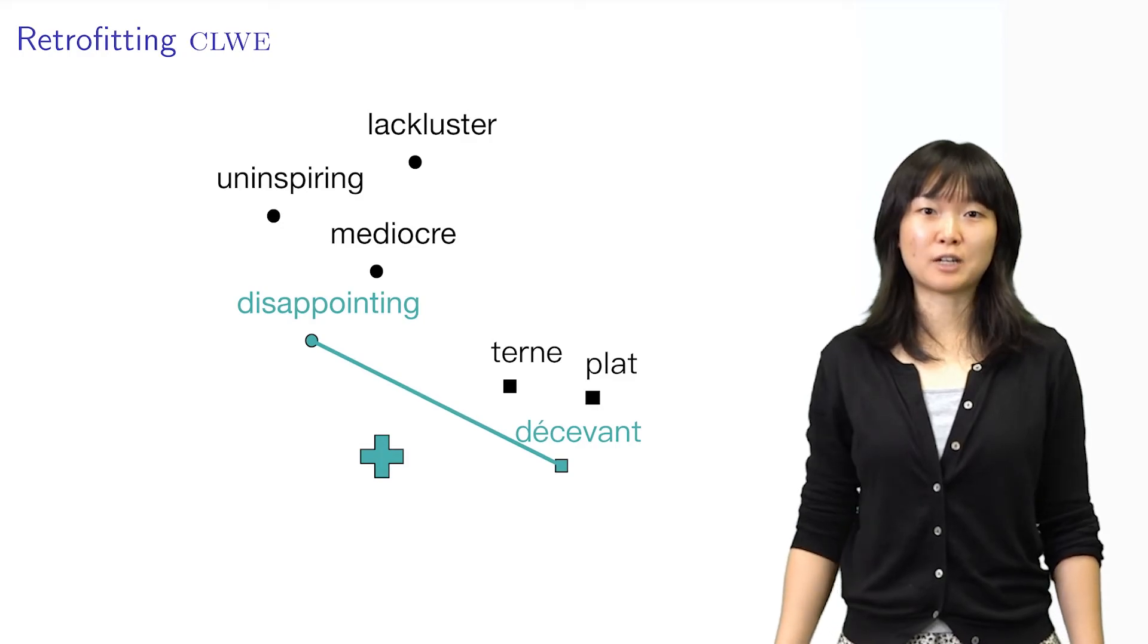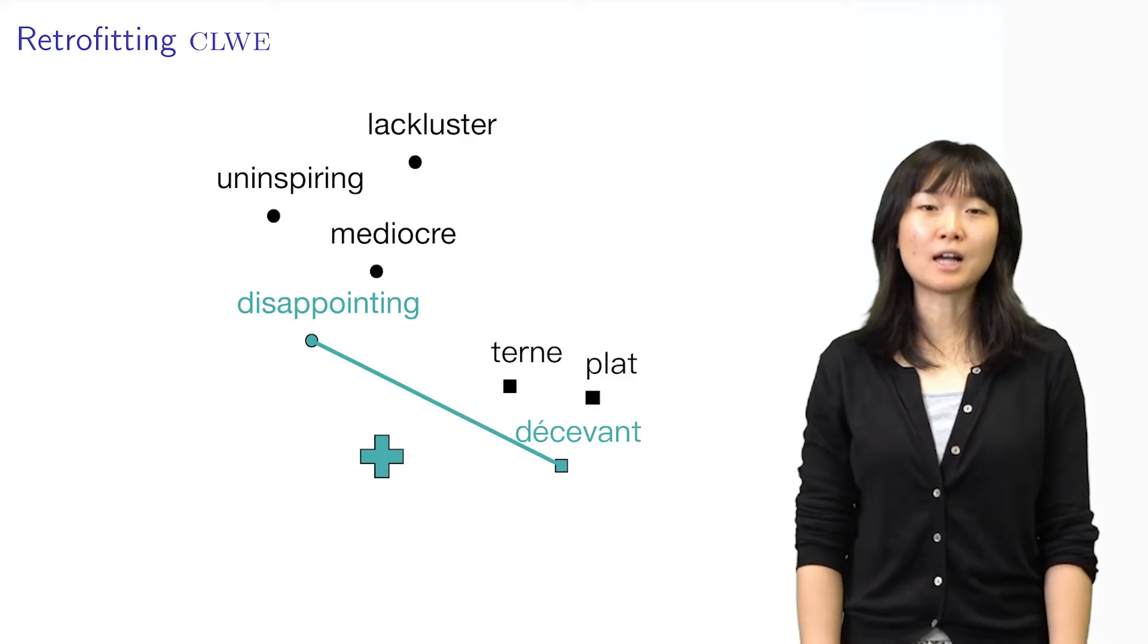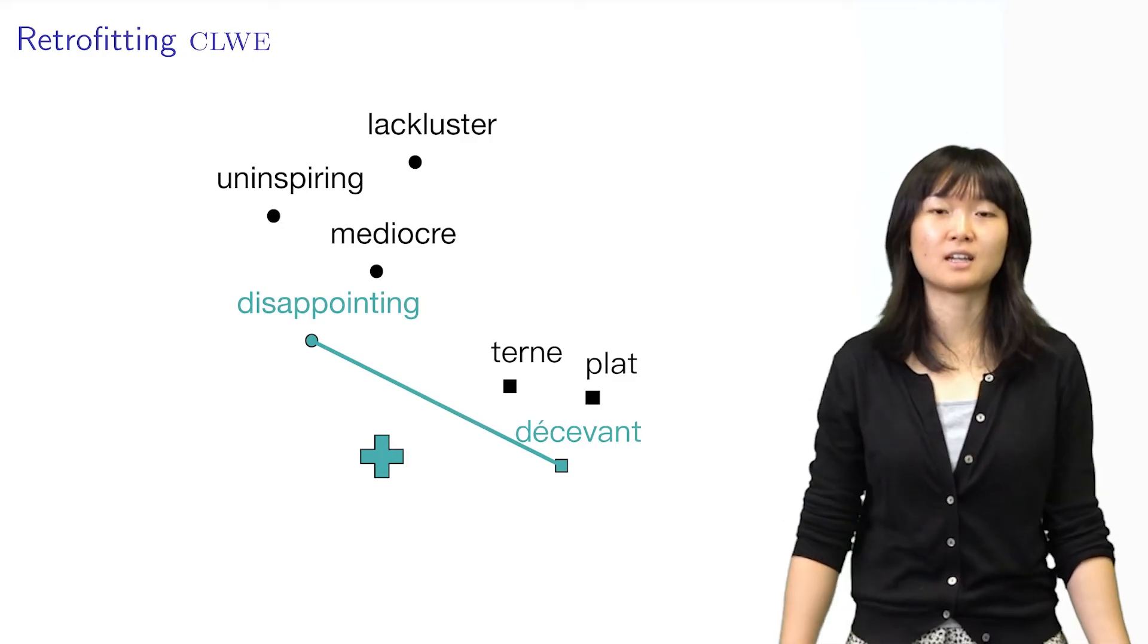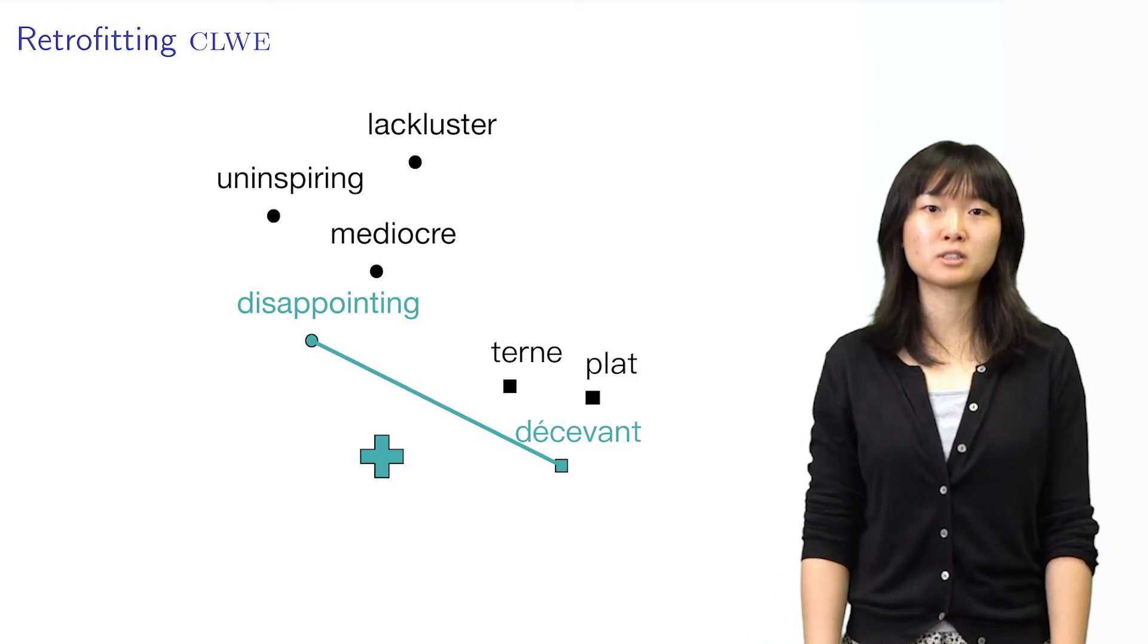This is an example of retrofitting word embeddings. Since there is a positive constraint between disappointing and décevant, then we are going to pull these two words closer together.